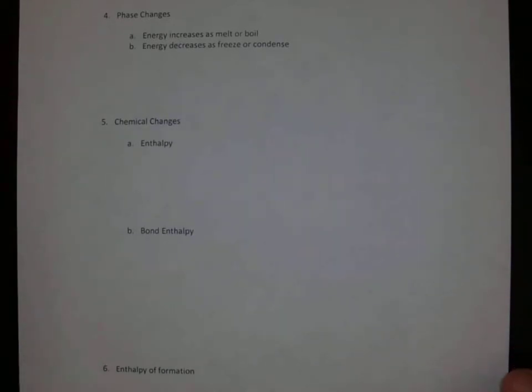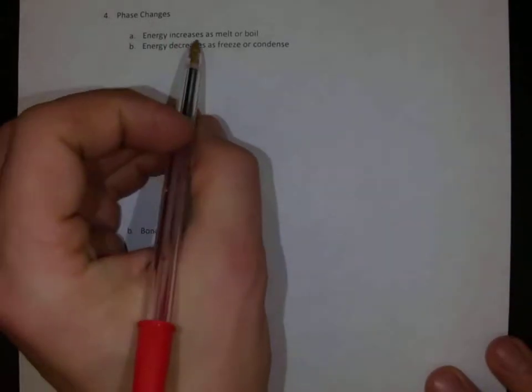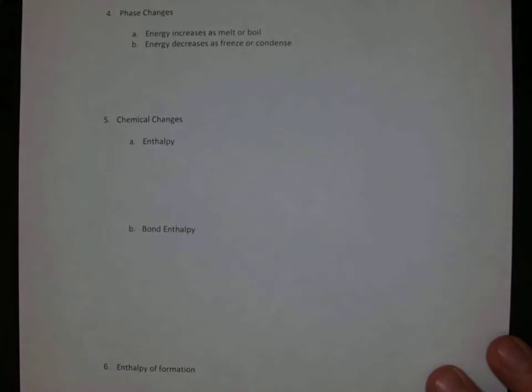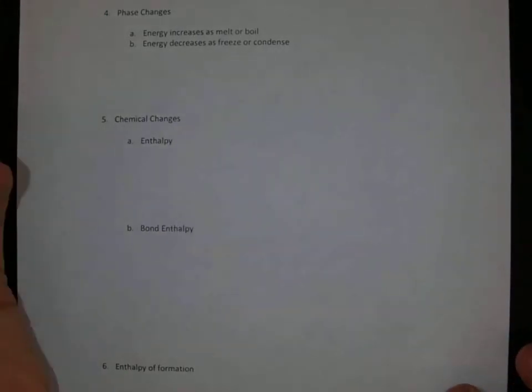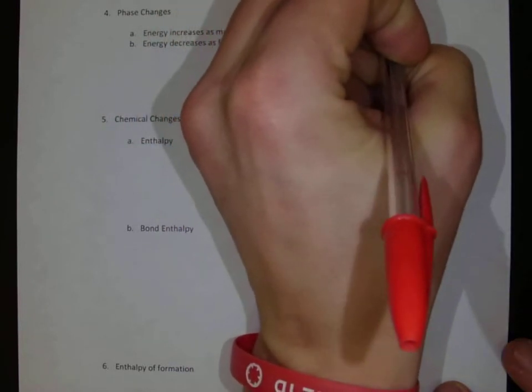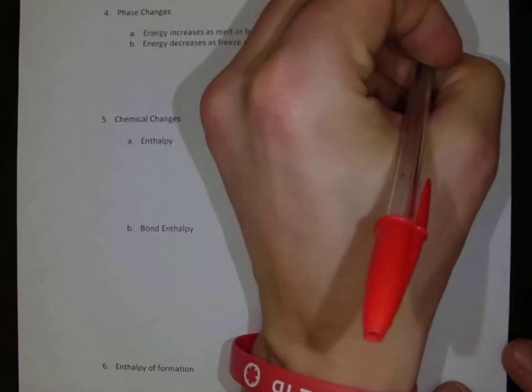So phase changes. We have one pure substance generally, and it takes a certain amount of energy to break those IMFs to change the phase. Energy is going to increase as we melt or boil, and it's going to decrease as we freeze or condense. But the temperature is constant.